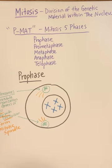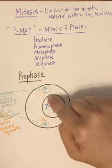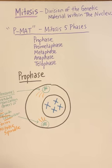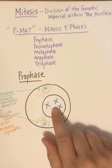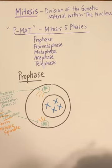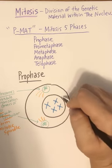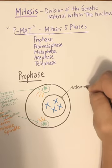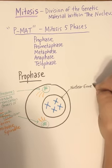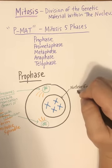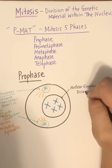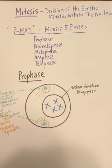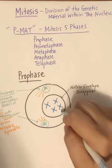Another thing that has to happen is you have to get rid of your nuclear envelope. In prophase, because you have your condensed chromosomes and we need to divide the genetic material, your nuclear envelope needs to disappear as the chromosomes continue to condense.